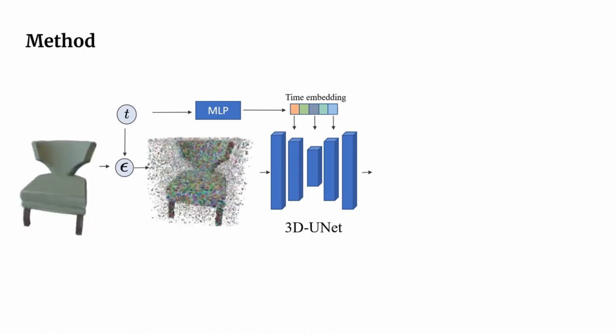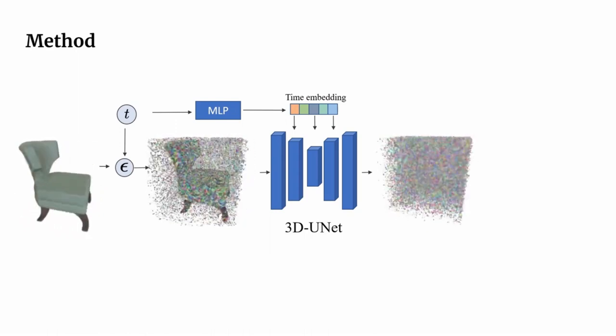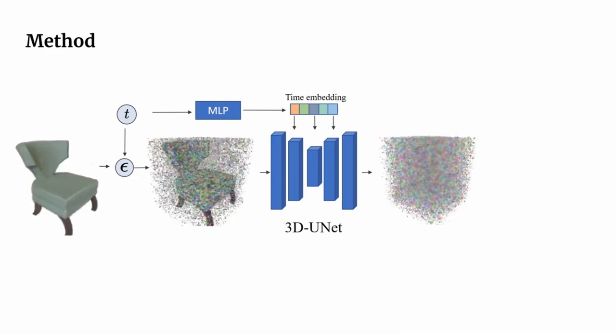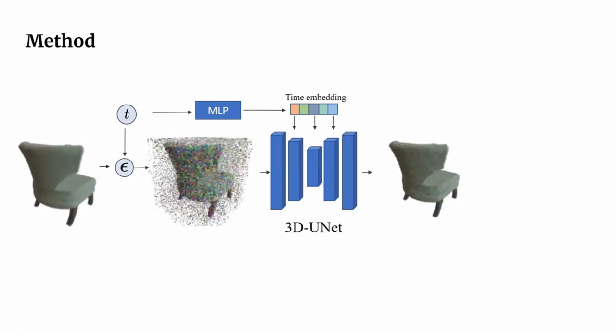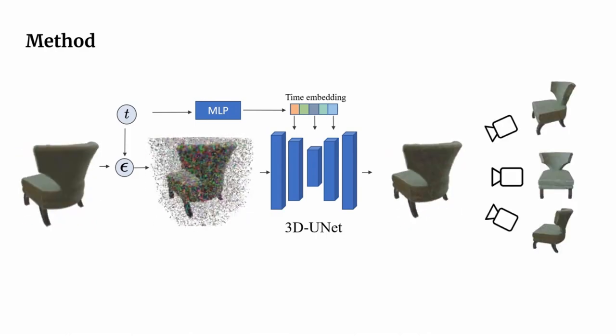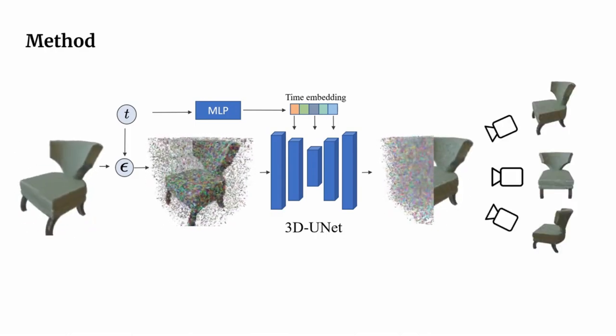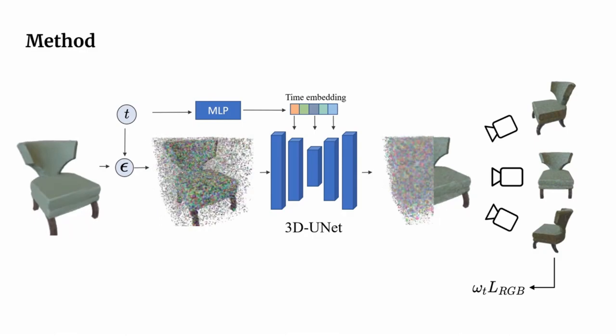Given a corrupted radiance field at a certain time step, the U-Net is trained to predict the noise applied at that step. We then use the predicted noise to estimate the original radiance field, render it to a set of views, and apply an image reconstruction loss together with a standard diffusion error.